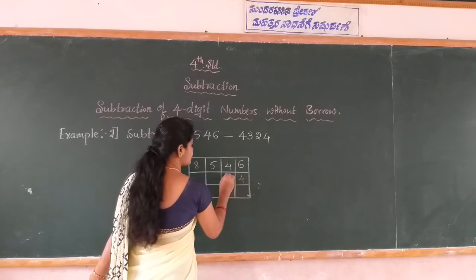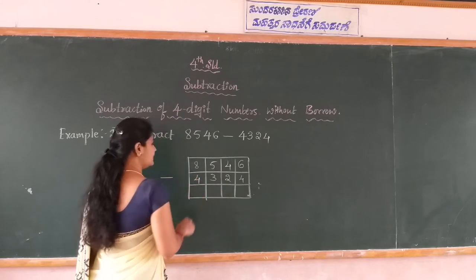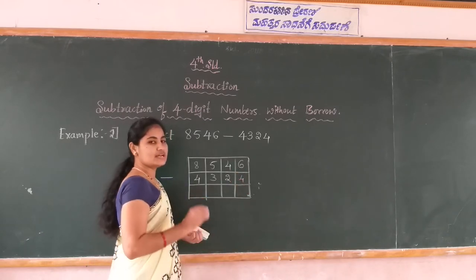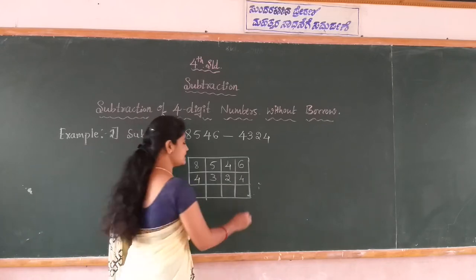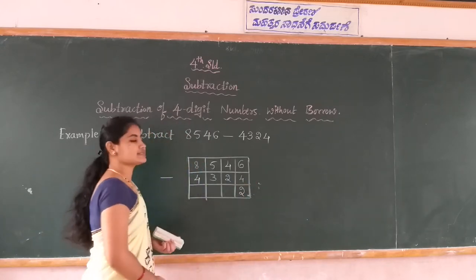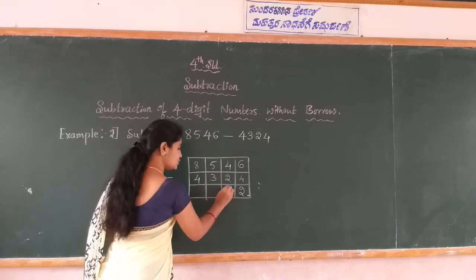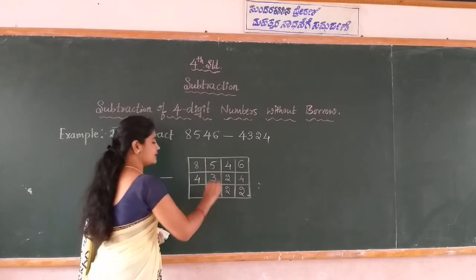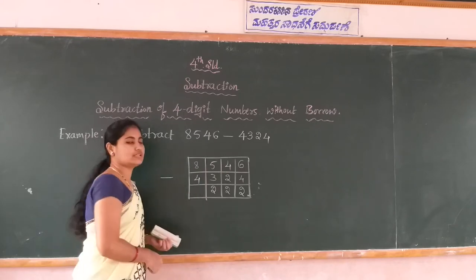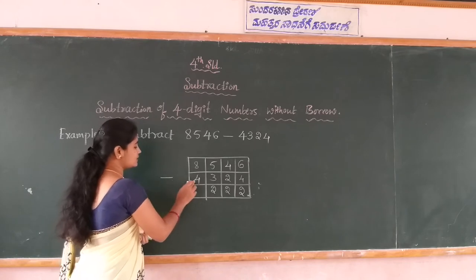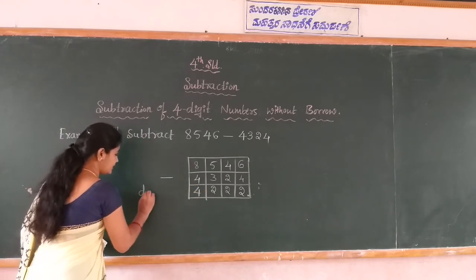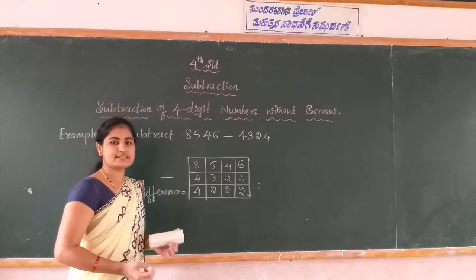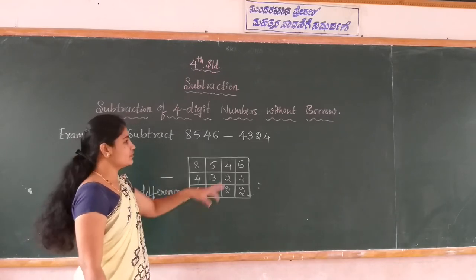4 is in the ones place, 2 is in the tens place, 3 is in the hundreds place, and 4 is in the thousands place. Start the subtraction from the ones place. 6 minus 4 is 2. Next, tens place: 4 minus 2 is 2. Next, hundreds place: 5 minus 3 is 2. Then thousands place: 8 minus 4 is 4. The result, called the difference, is 4,222. This is the method to subtract four digit numbers without borrow.